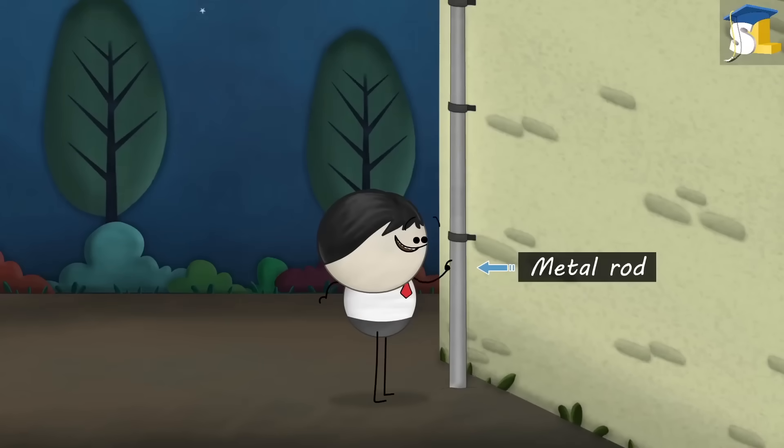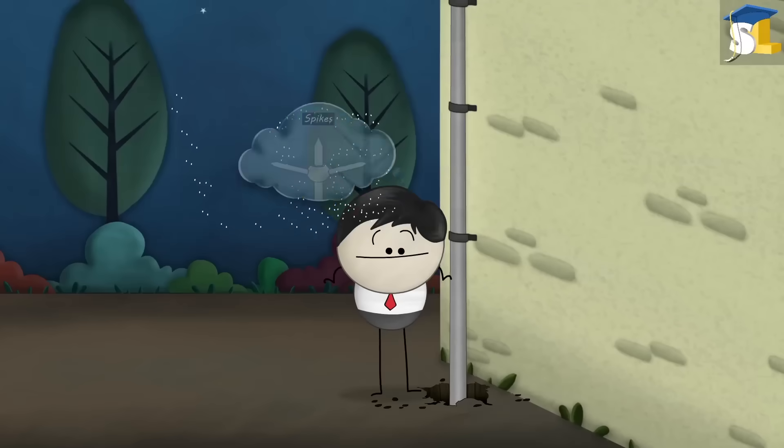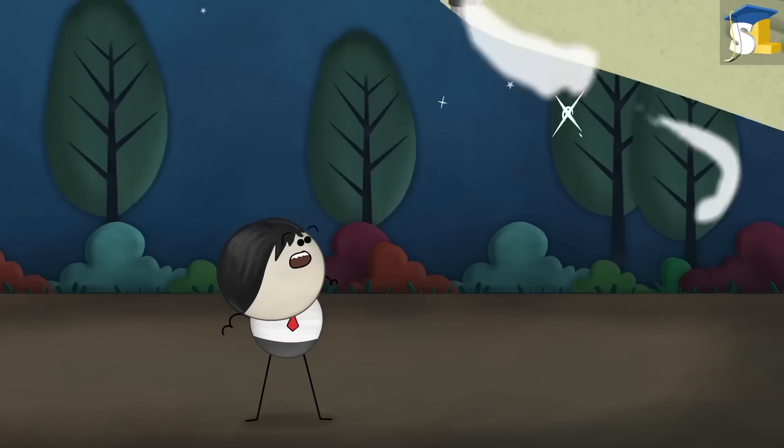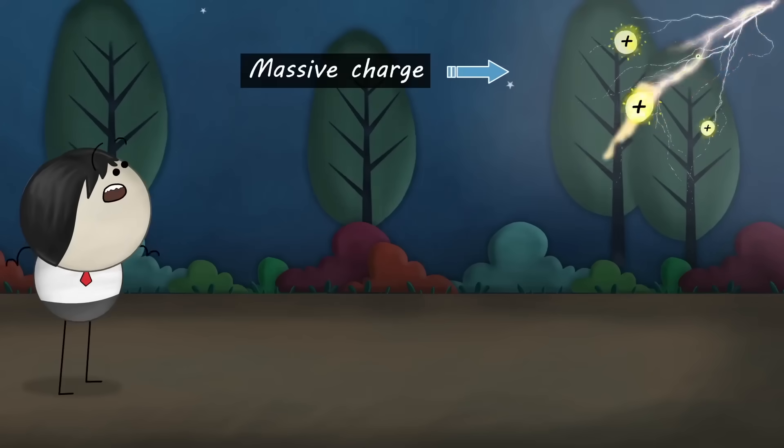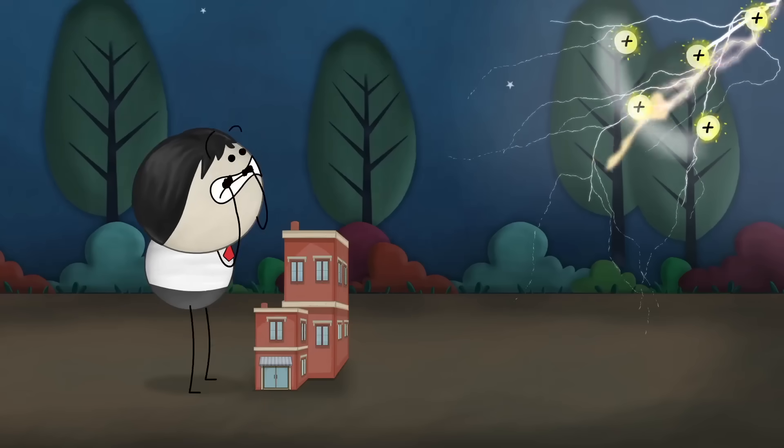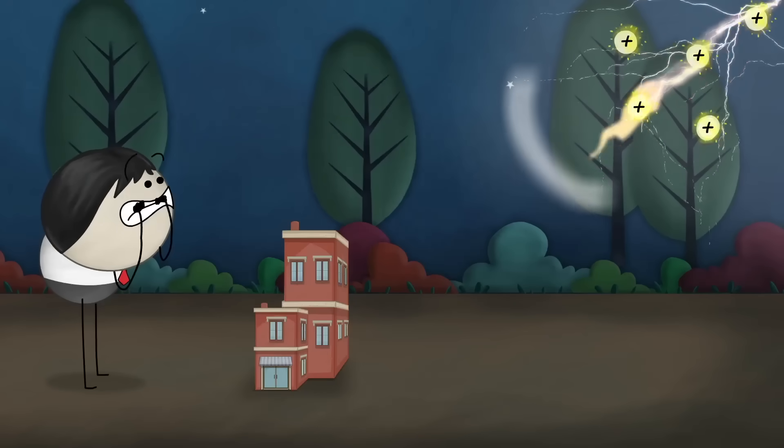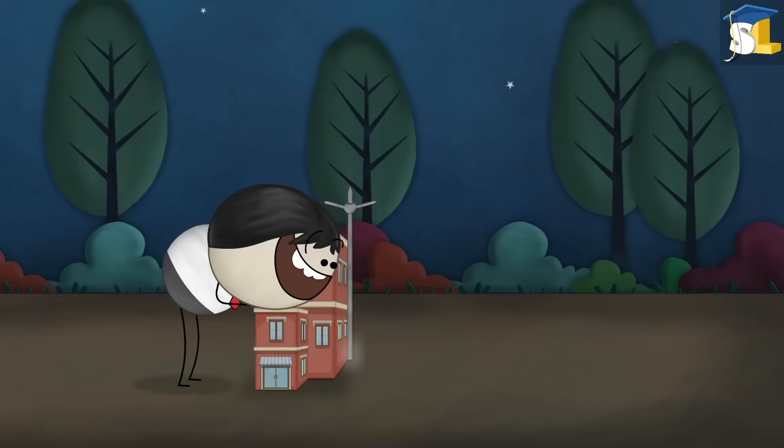A lightning rod is a metal rod whose lower end is fixed to a copper plate buried deep in the earth while upper end has spikes. But why is it called a lightning rod? This is because it protects us from lightning. Lightning is a flow of massive charge. It can damage an entire building and harm the people living in it. Hence, to protect them, the lightning rod transfers the massive charge from the lightning to the earth safely.